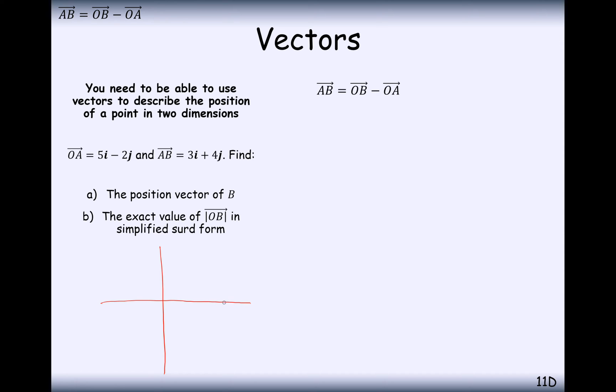So OA is 5 across, 2 down. So that's where the coordinate A is. And to get from A to B, we then go 3 to the right and 4 up. So 3 to the right and 4 up. And the way we got here was by going 5 to the right and 2 downwards.